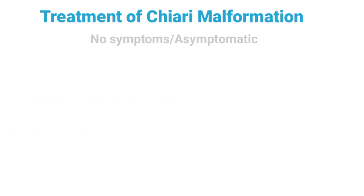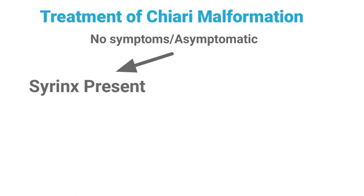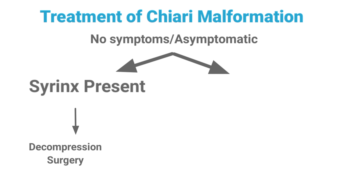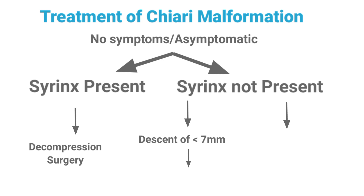If the patient has no symptoms of Chiari malformation and there is a syrinx — a fluid-filled cavity in the cervical spinal cord — the patient is asymptomatic plus syrinx is positive, we go for decompression surgery. If the patient is asymptomatic and there is no syrinx, we look at the descent of structures. If the descent is smaller than 7 mm, we just observe the patient and close follow-up is maintained.